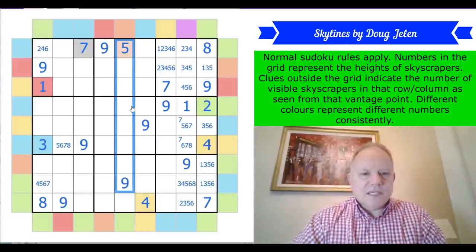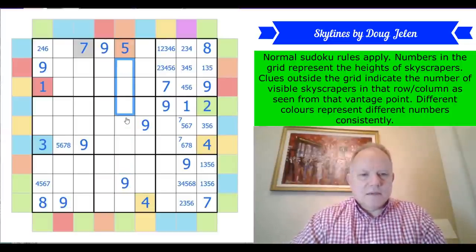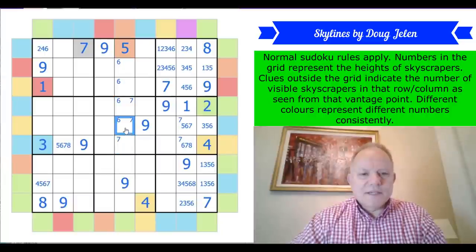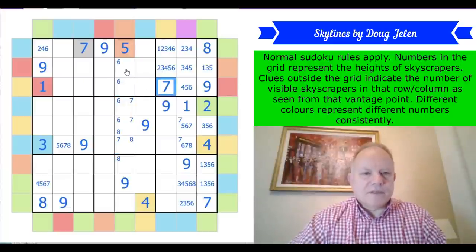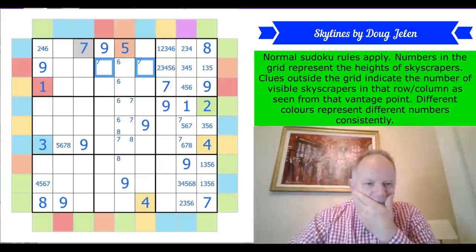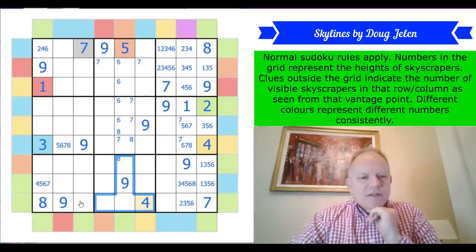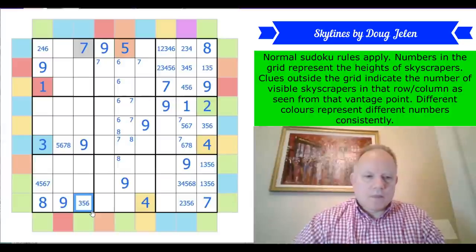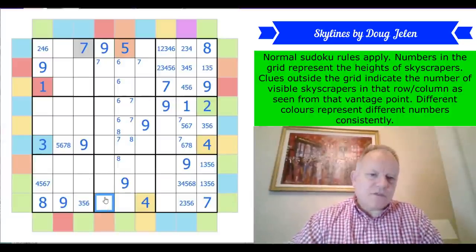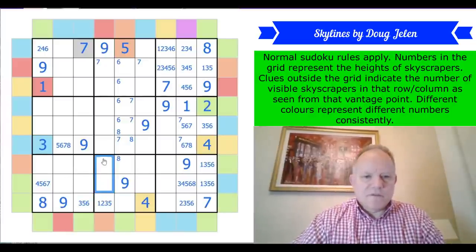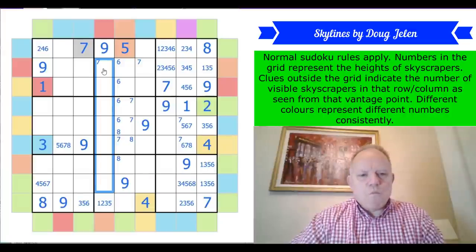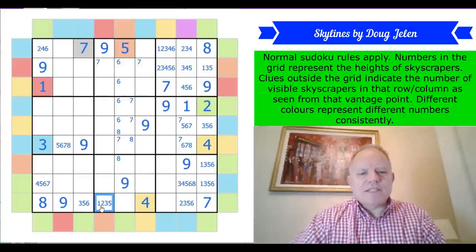Seven is confined to this box because it can't be there by Sudoku and must come between the six and the eight. That puts seven in one of those two cells. This cell is going to be bigger than those two. Another orange here, so that can't be more than five. I'm wondering where it's going to meet a seven since it now can't be in any of those cells, but it doesn't have to have the seven in the count.